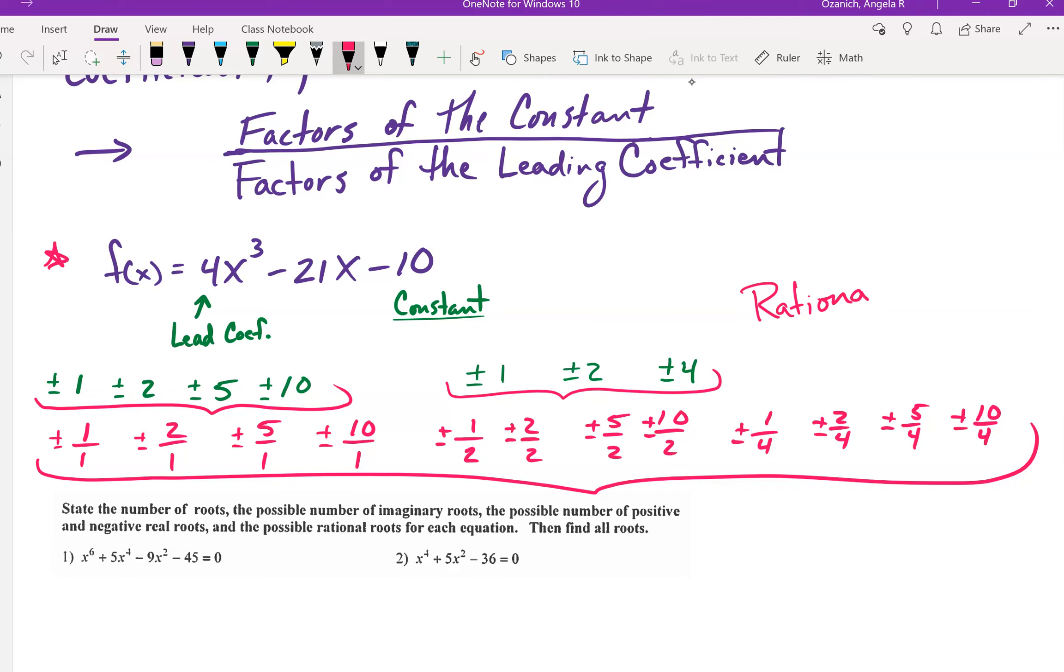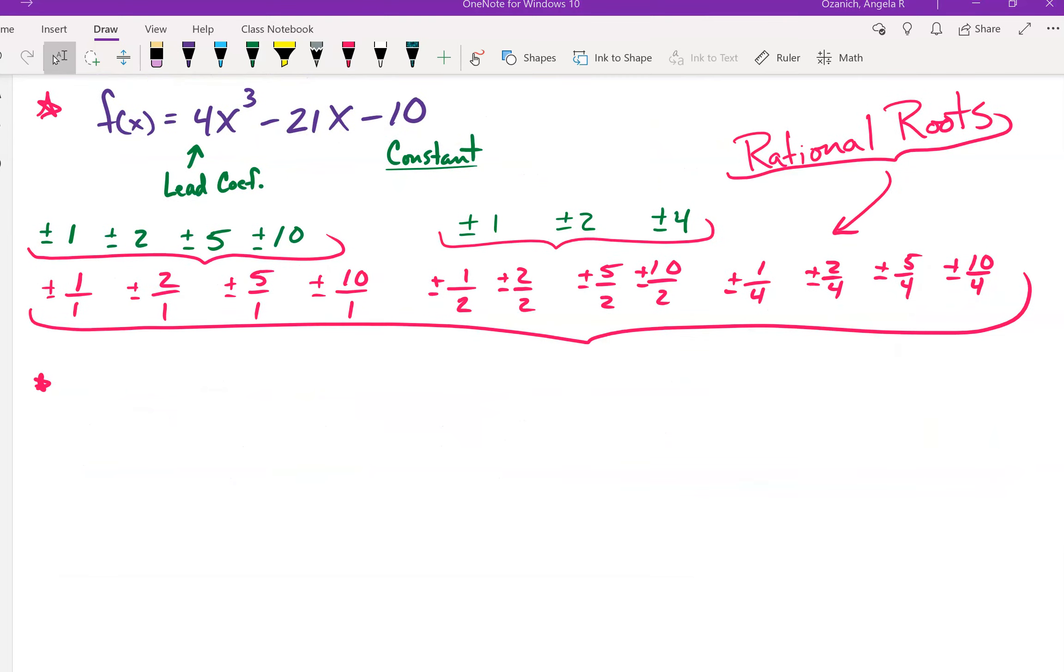And then some other choices are also, again, 1, 2, 5, and 10, factors of your constant divided by factors of your leading coefficient. And 4 is my last choice for factors of my leading coefficient. Okay. So all of these choices from here to here make up your possible rational roots.